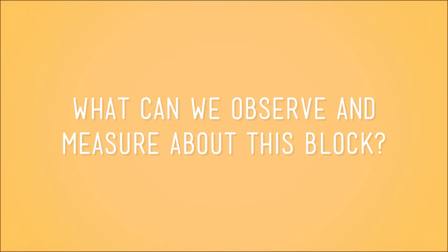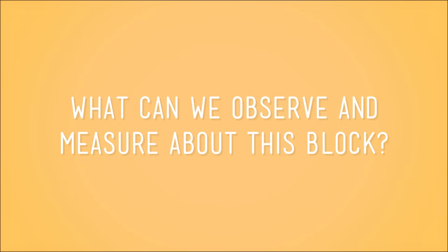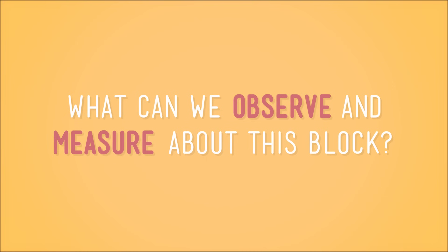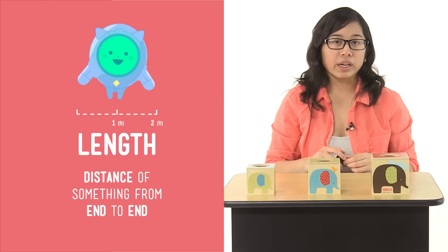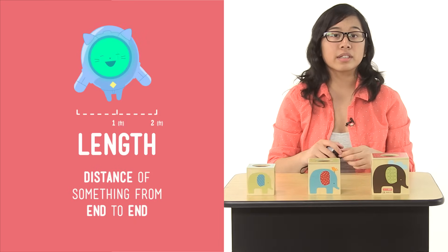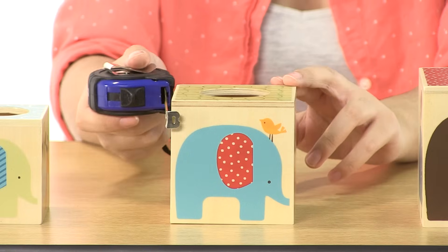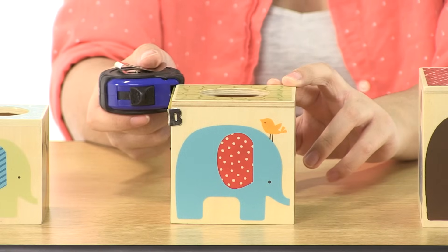Well, there are some properties that we can observe but can't really measure or describe with numbers, like this block's color, or what it's made of, or even the fact that it holds its shape, which makes it a solid. So a better question to ask might be: what can we observe and measure about this block? Let's start with the big one — length. Length is just a distance of something from end to end, and this block's length is eight and a half centimeters.